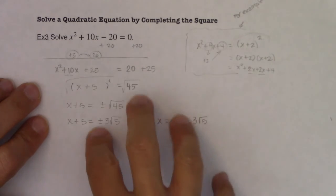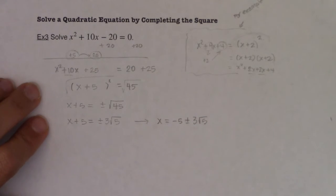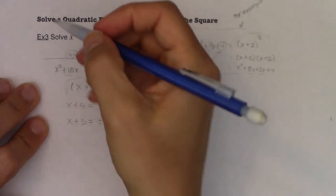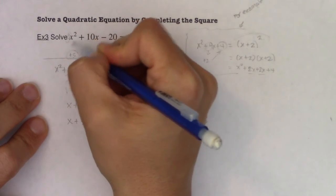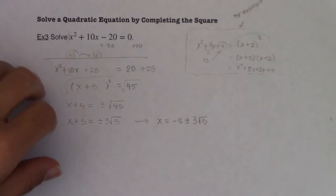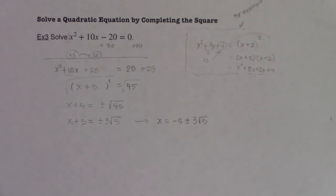So we're going to practice this in the next example, but things are going to get slightly more complicated because in this example, your lead coefficient was 1. Things are always easier when your lead coefficient is 1. It's true for factoring, it's true for the quadratic formula, and it's true for completing the square. So when we get to example 4, you have a more convoluted problem, and we're going to solve it via completing the square. All right, I'll see you in a few. Bye.